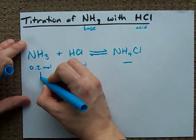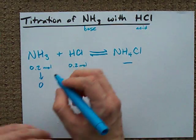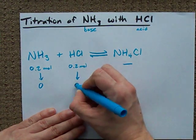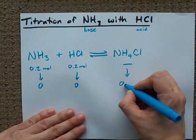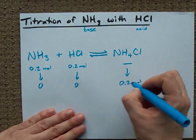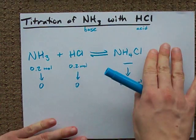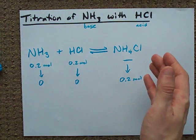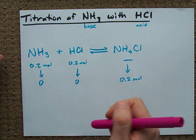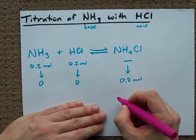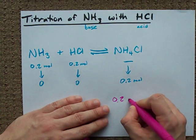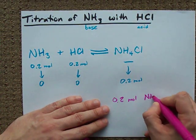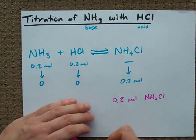After these react, we get rid of 0.2 moles of that, we get rid of 0.2 moles of that, and we end up with 0.2 moles of this. At the equivalence point, if you're asked to figure out the pH of this solution, or if you're asked what's in the solution, the answer is you have 0.2 moles of NH4Cl.